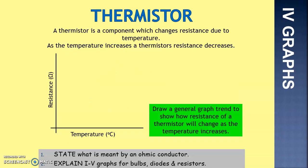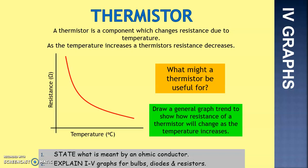A thermistor is a component which changes resistance due to temperature. As the temperature increases, the thermistor's resistance decreases. Sketch that graph and draw a line showing the general trend. What might a thermistor be useful for? You've got one in your house — it helps with your central heating, turning it on and off when a certain temperature has been reached.